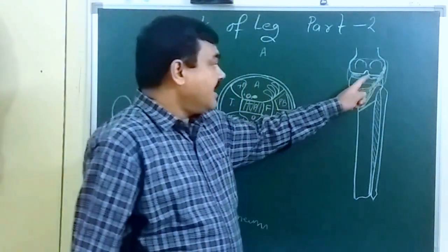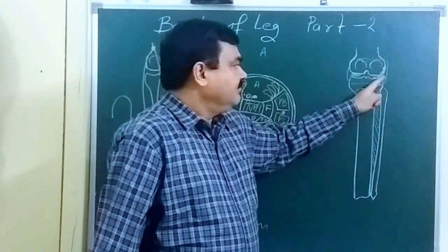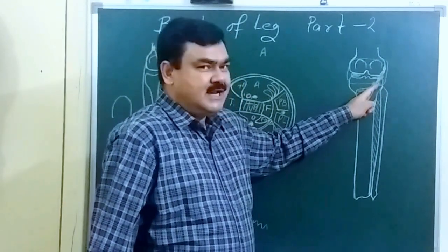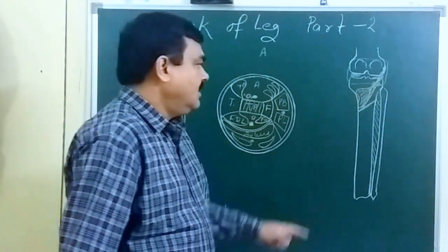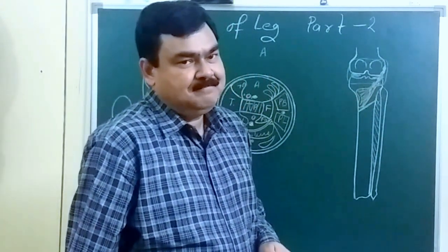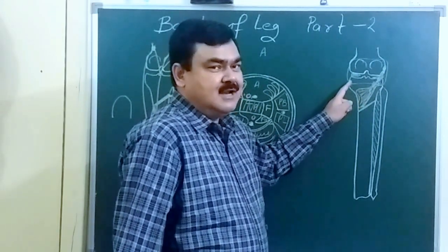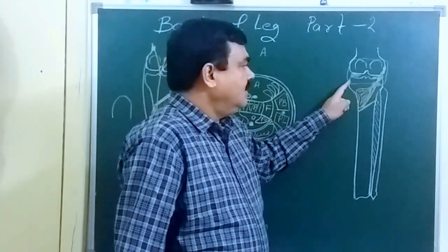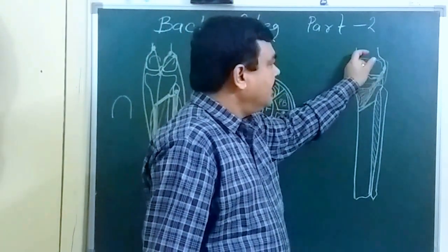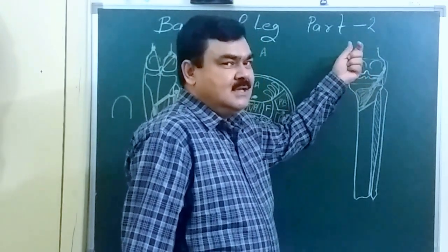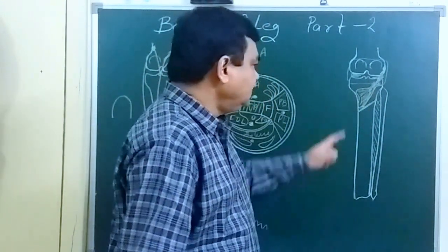So the popliteus is intracapsular. It takes origin from the lateral part of the lateral condyle, also from the lateral meniscus, and some fibers arise from the arcuate ligament. It is inserted above the soleal line on the posterior surface of the tibia. Its prime action is that it is the unlocking muscle of the knee joint. During the initial stage of flexion, it slightly rotates the femur laterally and thus unlocks the knee joint.